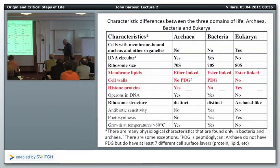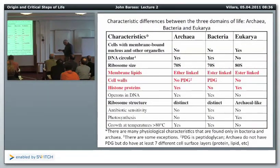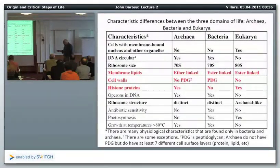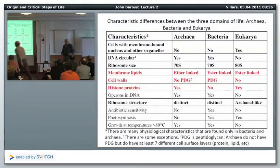Ribosome size is different — in eukaryotes it's bigger, but it has characteristics resembling archaea. One of the dominant differences between archaea and bacteria/eukaryotes is that archaea do not have ester-linked lipids; they have different cell walls as well.